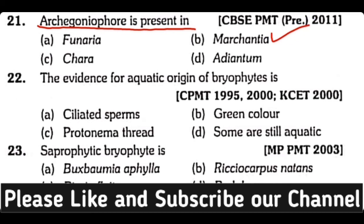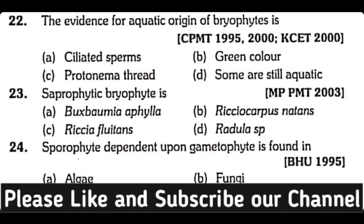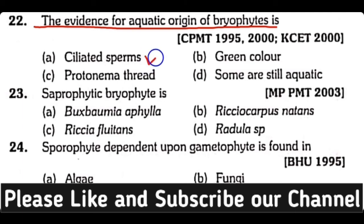Question number twenty-two: the evidence for aquatic origin of bryophytes is — ciliated sperms, green color, protonema thread, or some are still aquatic? The correct answer is option A: presence of ciliated sperms in bryophytes suggests that they have an aquatic origin.